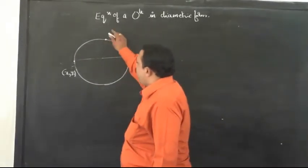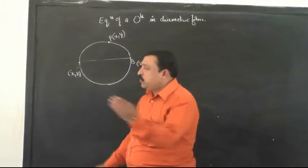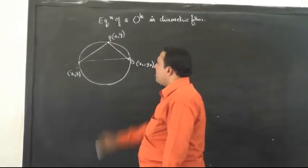Consider any point, say P(X, Y), on the circumference of the circle and now you join AP and BP.